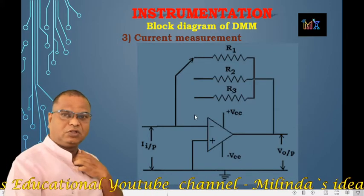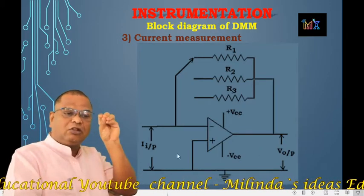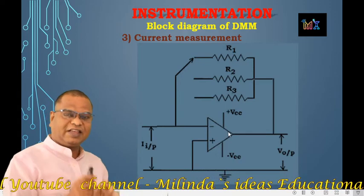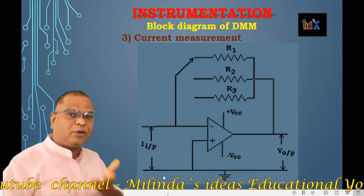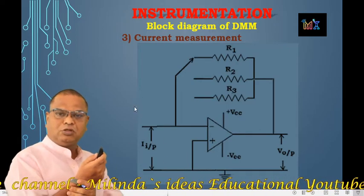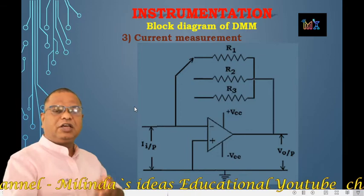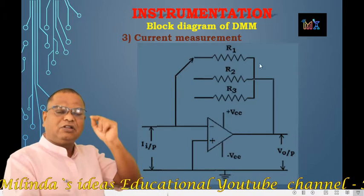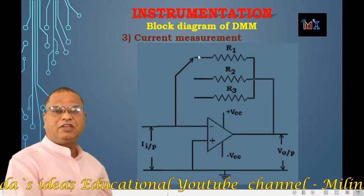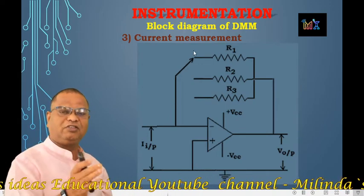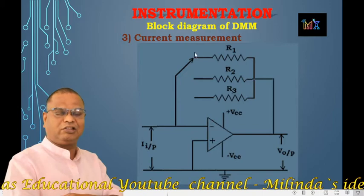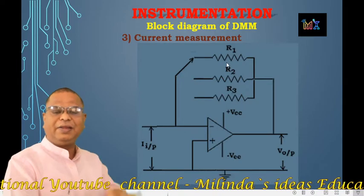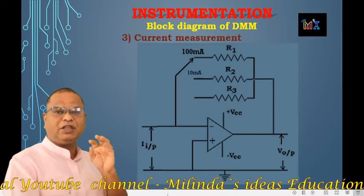The current-to-voltage converter circuit uses an operational amplifier. The op-amp is used as a current-to-voltage converter. The input current to be measured is applied to the input terminal of the op-amp. In this circuit, there are three feedback resistors: R1, R2, and R3. These resistors are connected to the input signal through a single-pole multi-position switch. The range of the multimeter is 100 mA, 10 mA, and 1 mA.